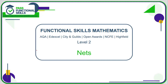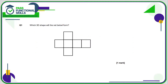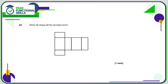Let's take a look at the nets questions. Question number one: which 3D shape will the nets below form? If you're not sure, imagine you're doing some origami. Imagine you're making some folds around this square here, so that this is the front. This would be the top, this would be the bottom, this would be the left-hand side, this would be the right-hand side, and one final fold here would mean that this is the back of a cube.